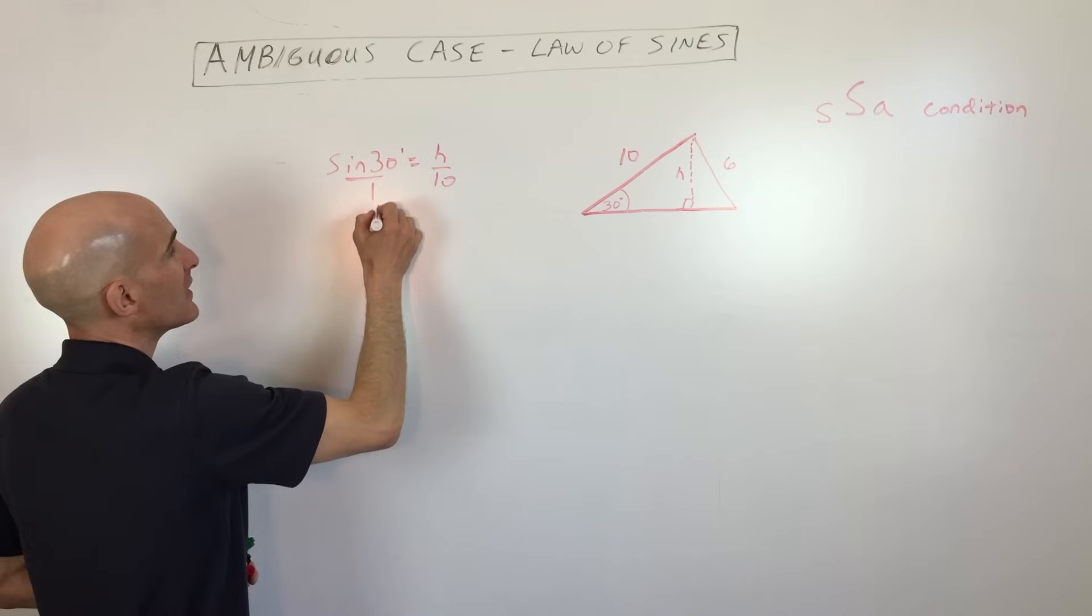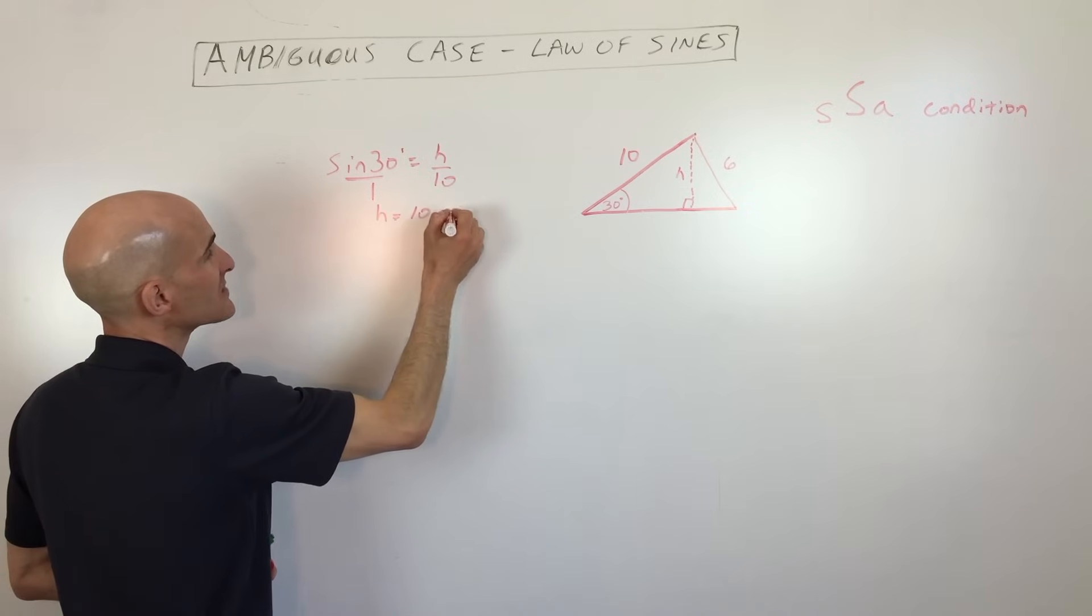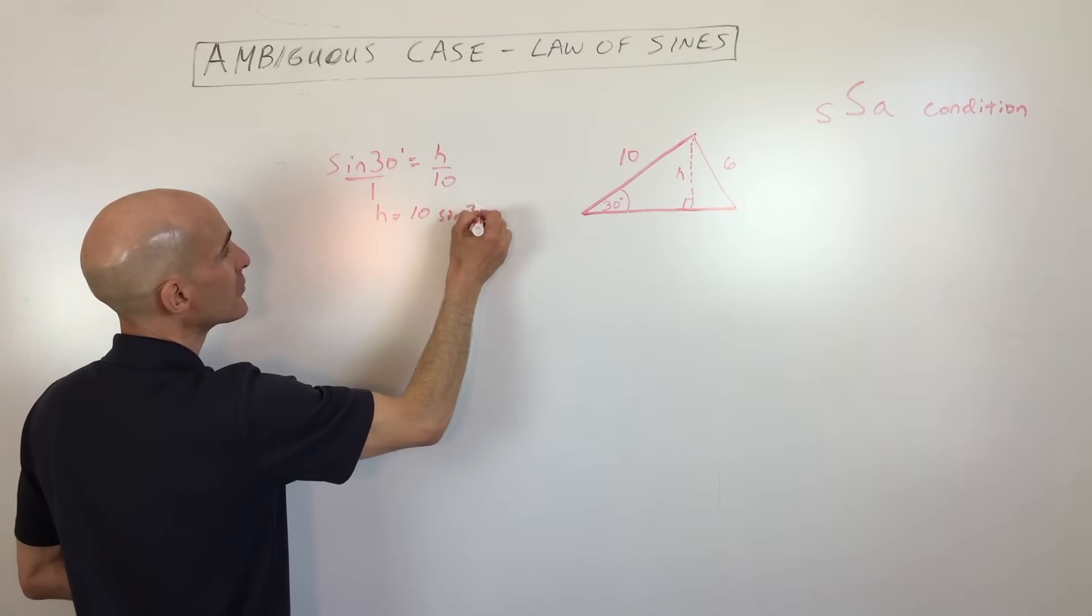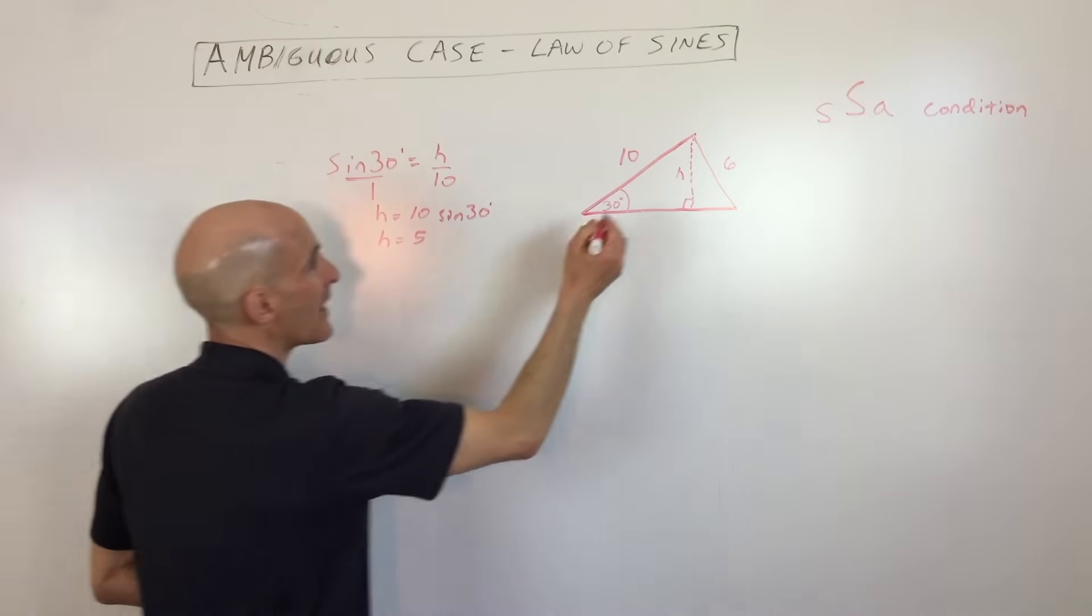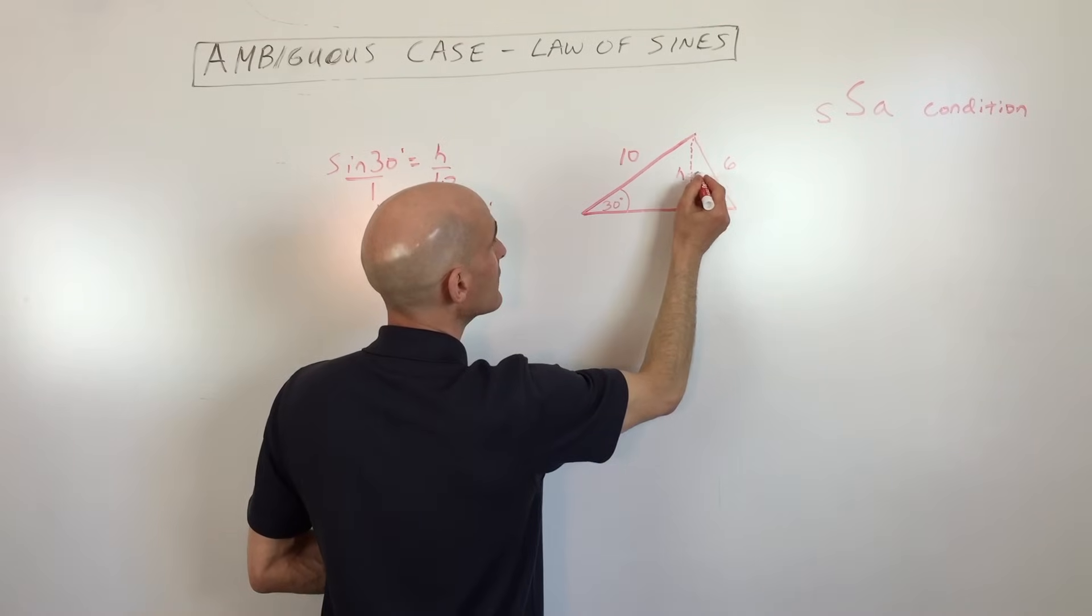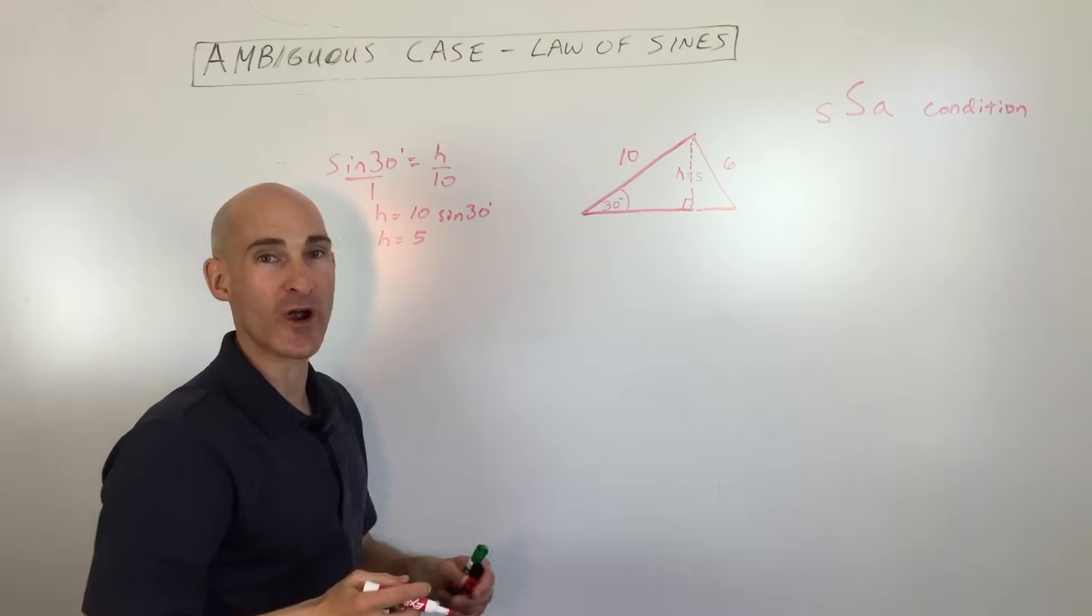Now if we cross multiply, we get H equals 10 times the sine of 30 degrees. Sine of 30 is a half times 10 gives us five, so this height over here is five. Okay, so you're with me so far?